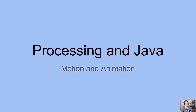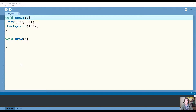Hi everyone. In this video I'll be going over how to create motion and animation using Processing and Java. Before starting, you should already have Processing installed from processing.org and be familiar with how to draw simple shapes and colors, as well as how to use variables and conditional statements, which you can find in the previous video. So let's open up Processing and get started.